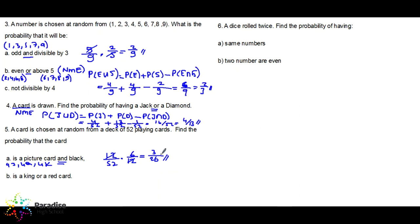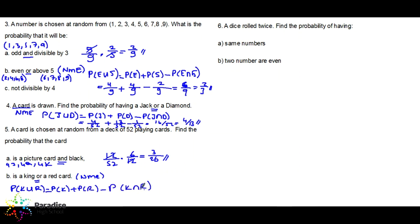Next: find the probability of a king OR a red card. Is there anything in common? Yes — two kings are red: the heart king and the diamond king. This is a non-mutually exclusive event. Probability of king or red equals probability of king plus probability of red minus probability of king and red. Probability of king is four over 52. Probability of red is 26 over 52. Probability of king and red is two over 52. That gives 28 over 52, which simplifies to seven over 13.